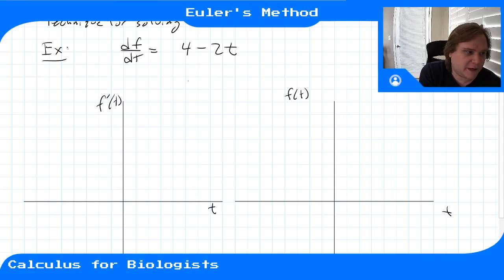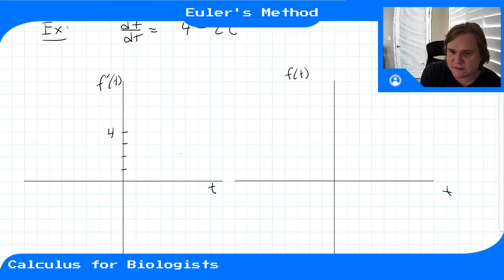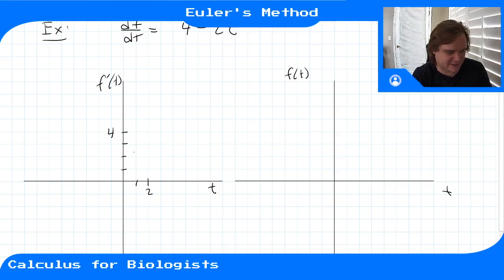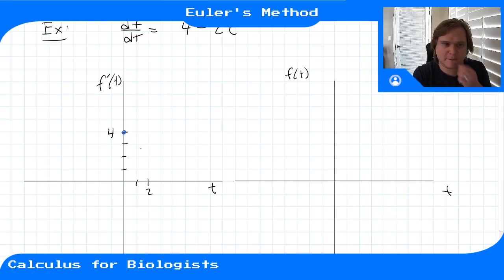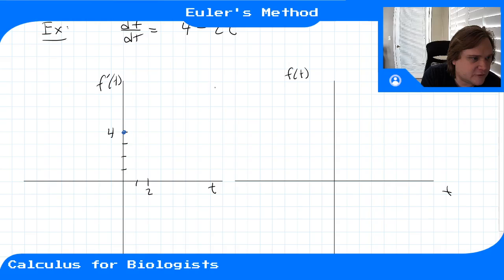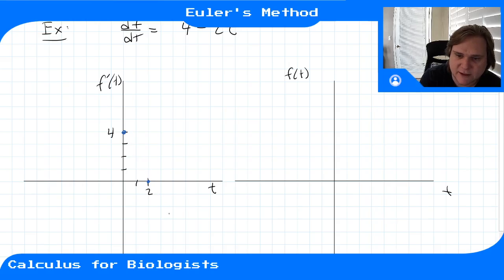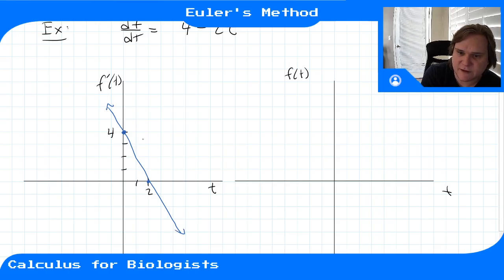If I draw the derivative 4 minus 2t: at t equals 0, 4 minus 2t is 4, and at t equals 2, 4 minus 2t is 0. So my line goes from 4 down to 0 — it's a nice straight line. So this is my derivative, f prime of t equals 4 minus 2t.